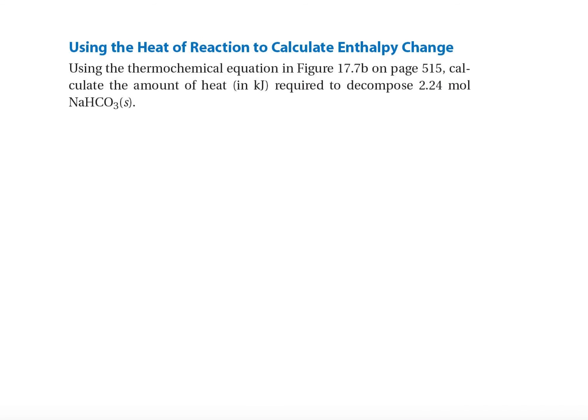Does the result make sense? Because the delta H equal to 129 kilojoules refers to the decomposition of 2 moles of NaHCO3, the decomposition of 2.24 moles should absorb about 10 percent more heat than 129 kilojoules, or slightly more than 142. The answer of 144 is consistent with this estimate.